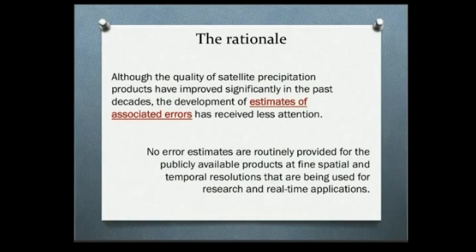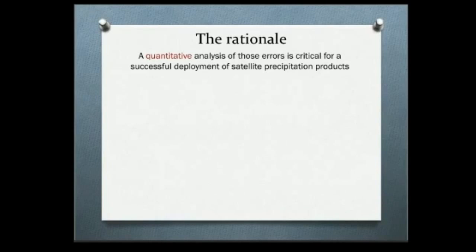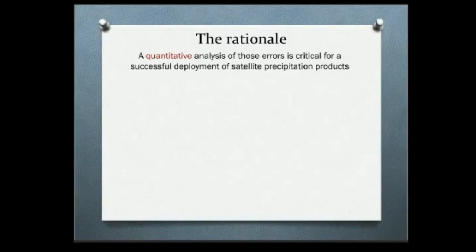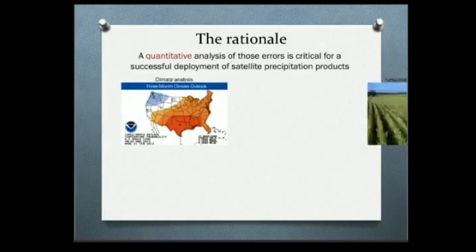So this is where I really want to focus. The idea is to quantify the uncertainty associated with satellite measurements. If a satellite tells me it rained 10 millimeters per day in Washington D.C. on March 20th, I want to know: is it really 10 millimeters per day, or is it 10 millimeters per day plus or minus something? This uncertainty is very important for a few applications.